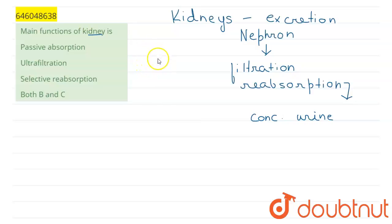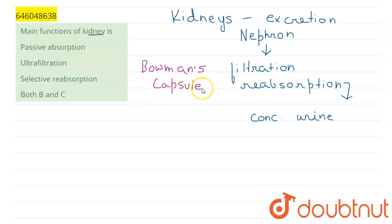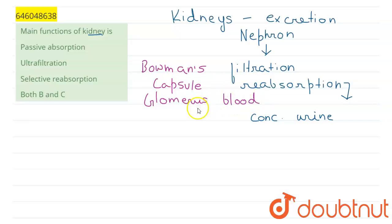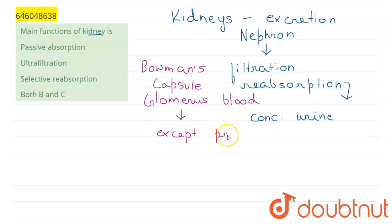In the Bowman's capsule, which is the first part of the nephron present in the cortex of the kidney, the glomerular blood is filtered. This filtration occurs under pressure, which is why it is known as ultrafiltration. All constituents of the blood except proteins are filtered here.